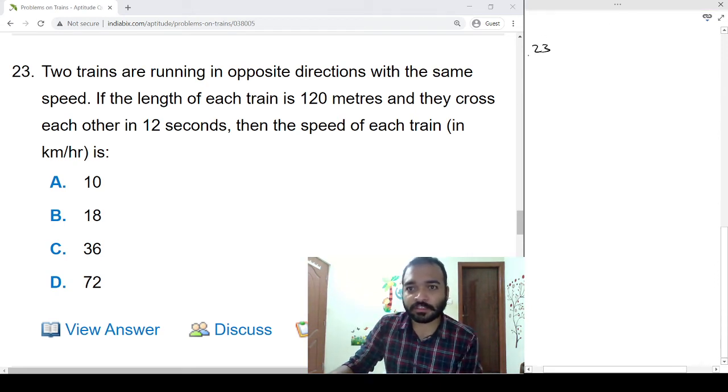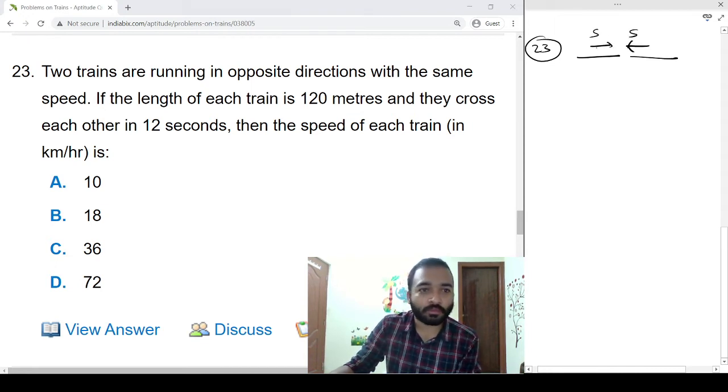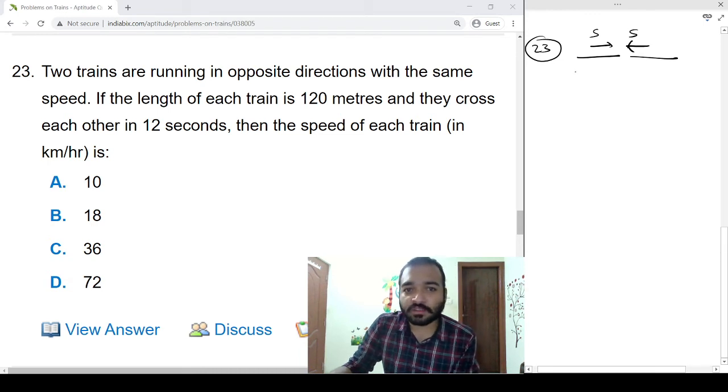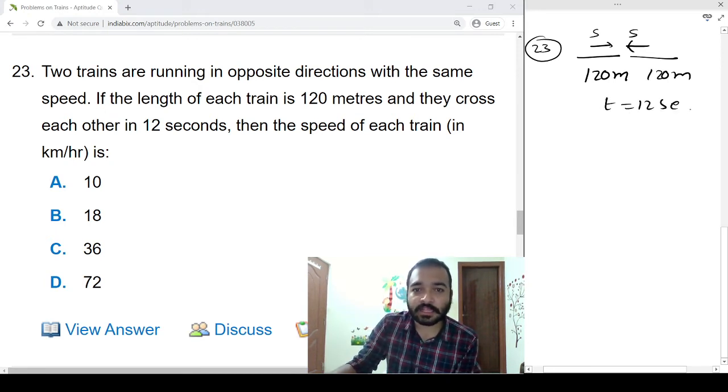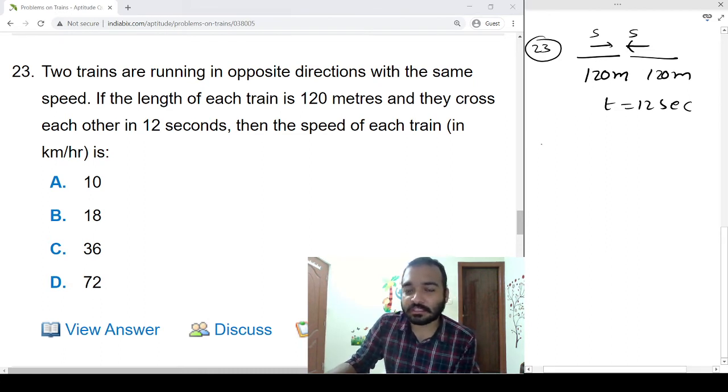Problem number 23: Two trains are running in opposite directions with the same speed. If the length of each train is 120 meters and they cross each other in 12 seconds, then the speed of each train in kmph.